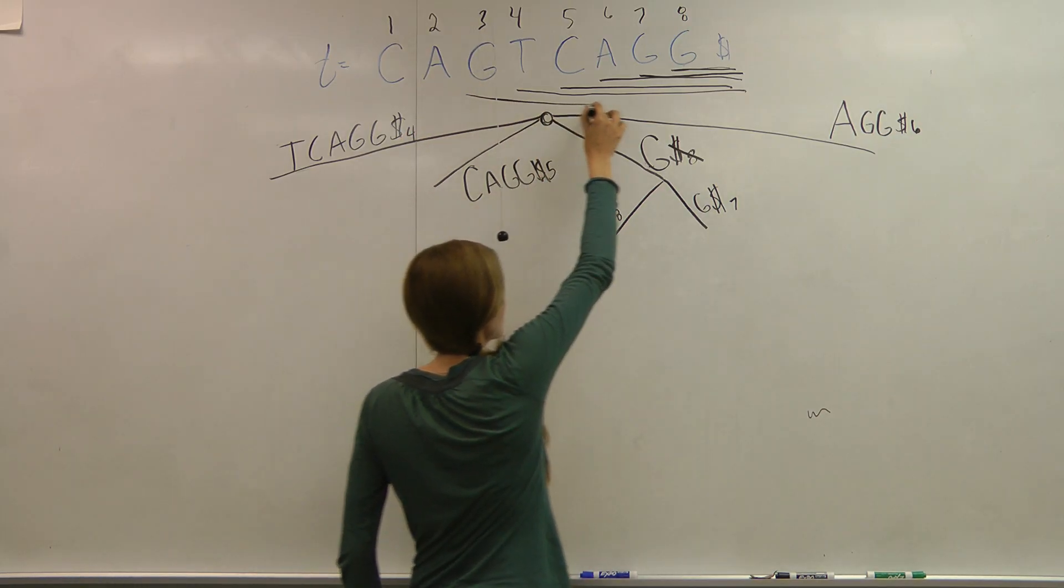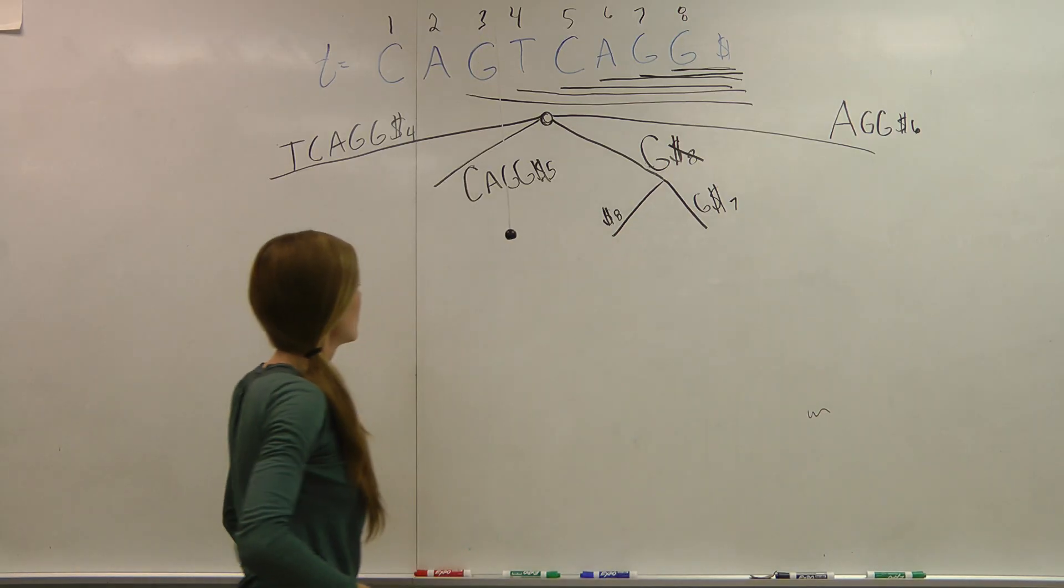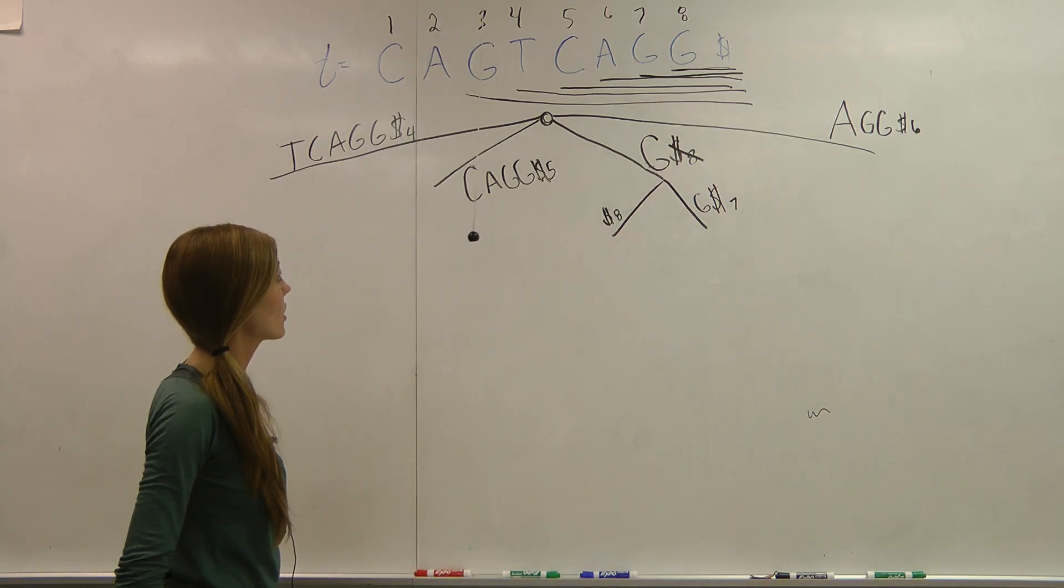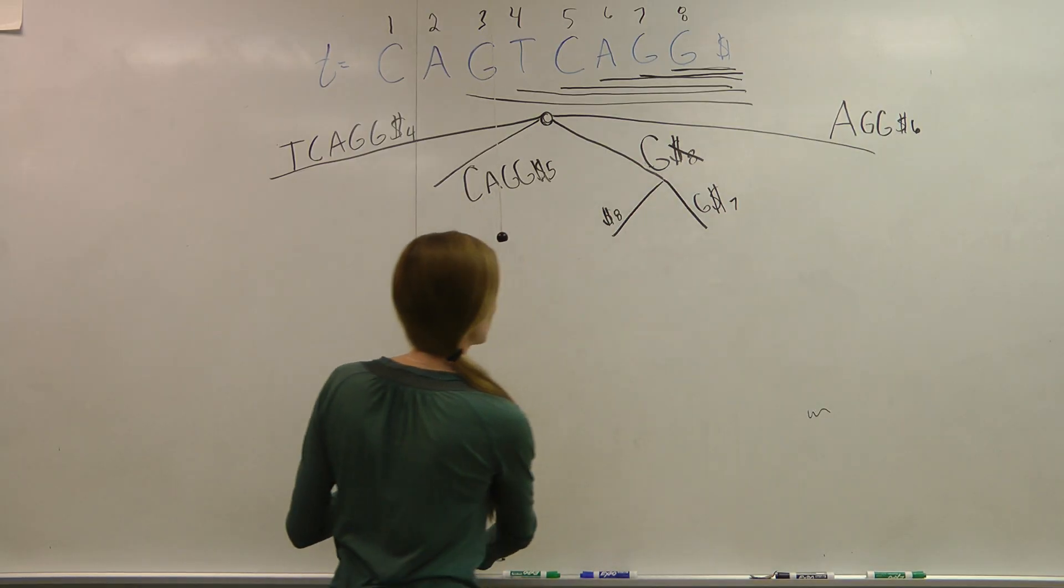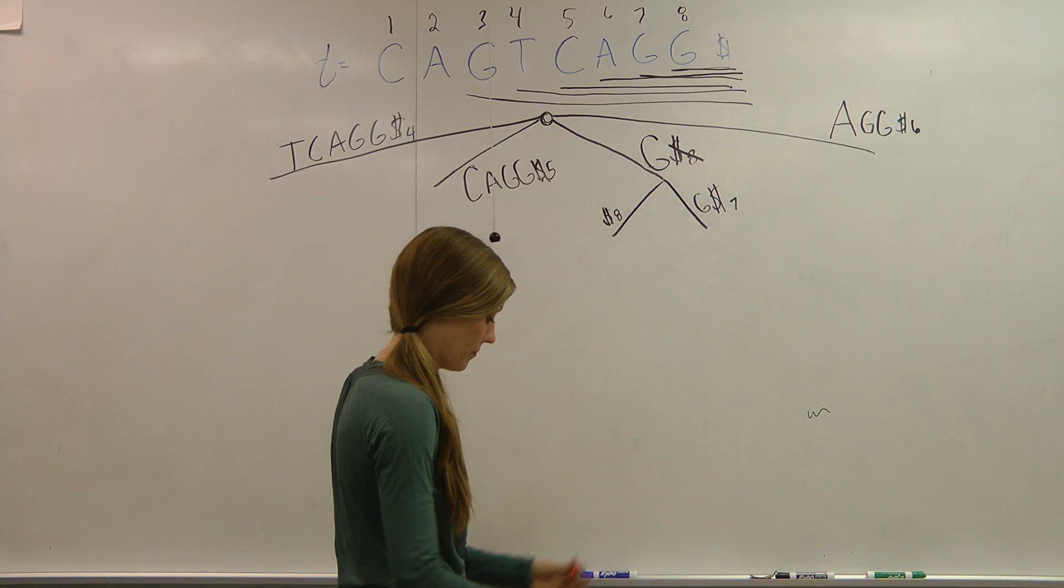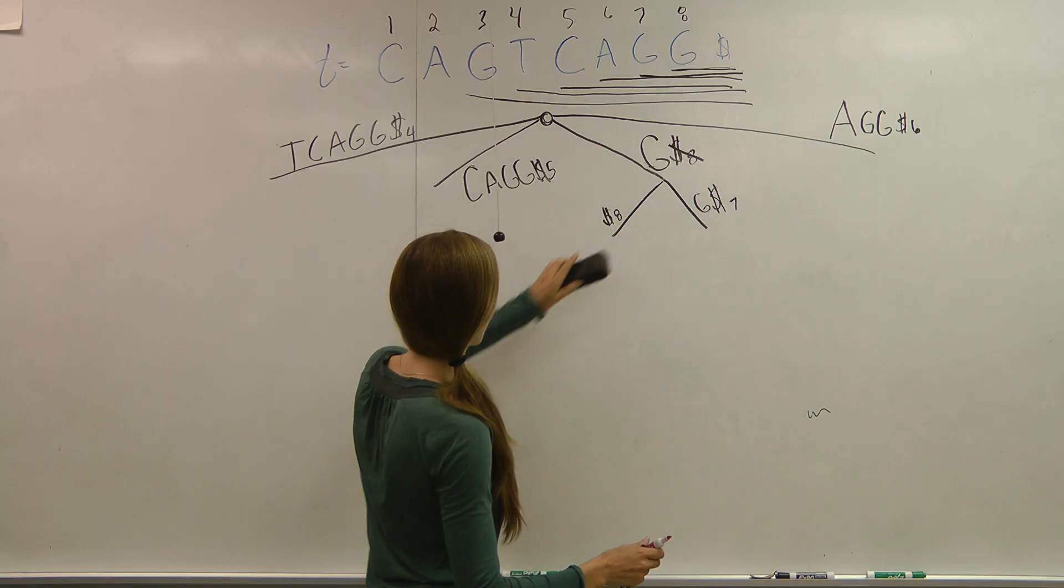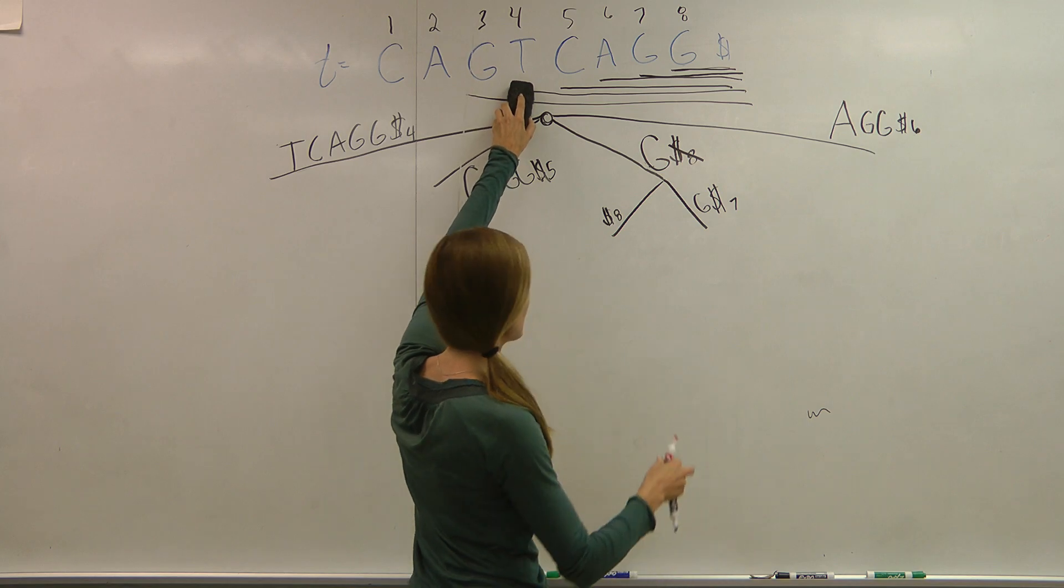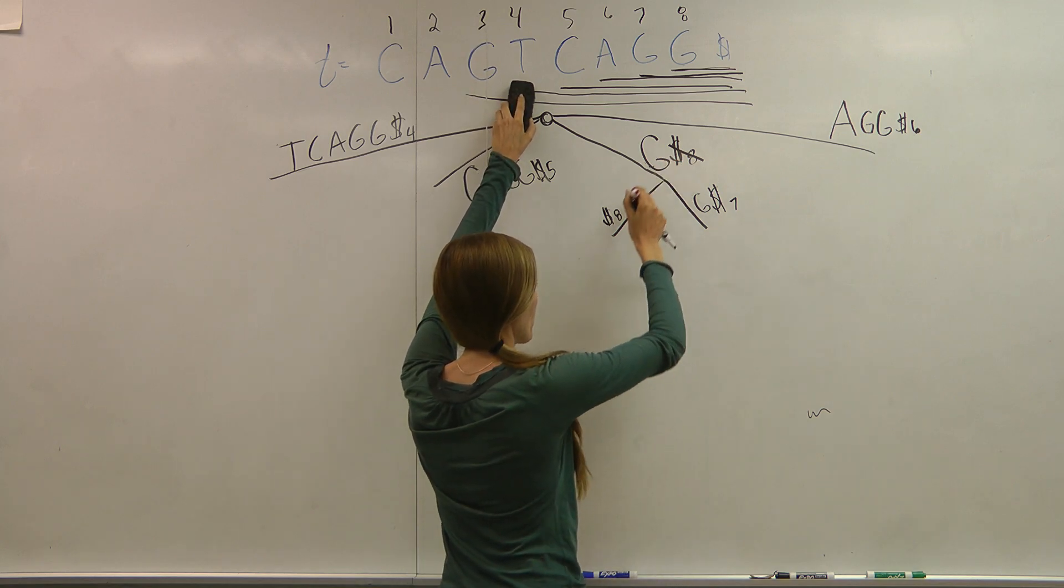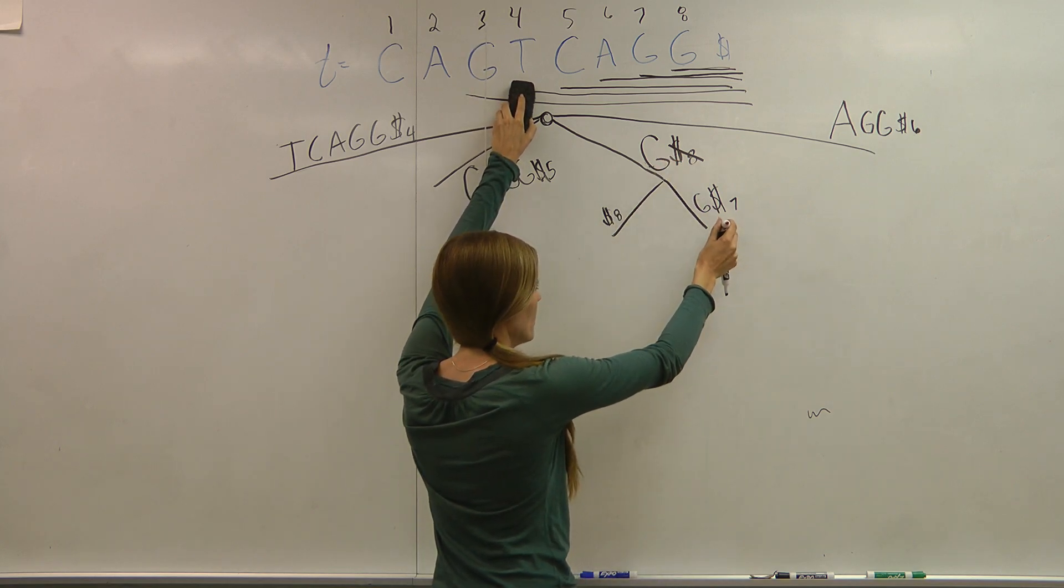I go to my next suffix, which starts at G. So I check for a G branch. I have a G branch. Okay. So I check the next letter, T. So I go G, and then do I have an option of T? I don't.